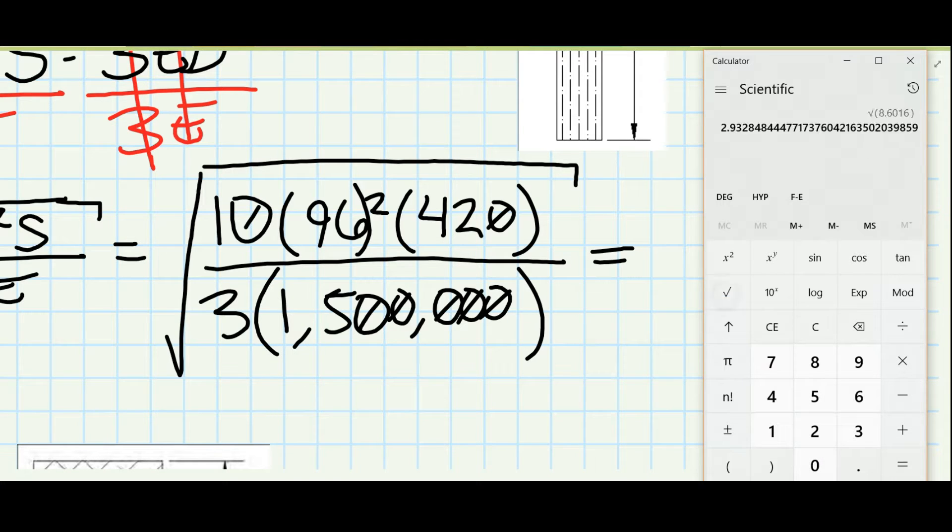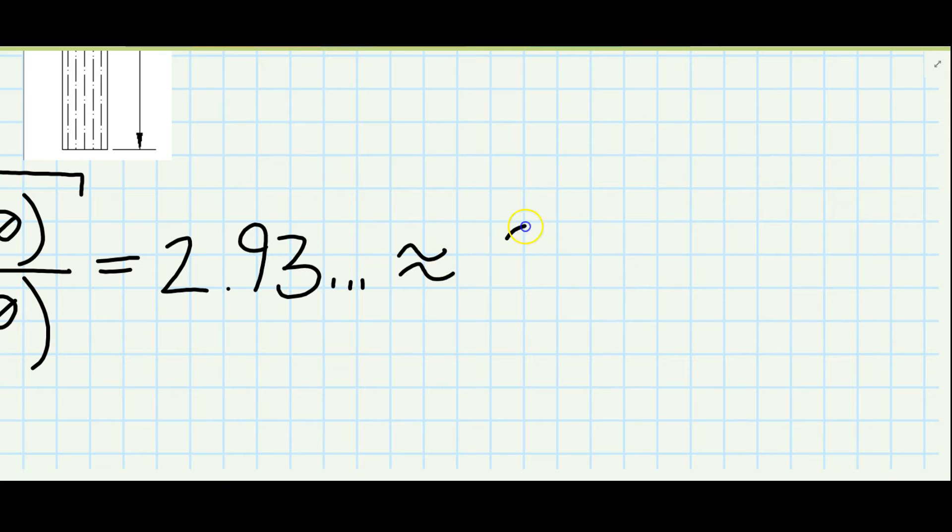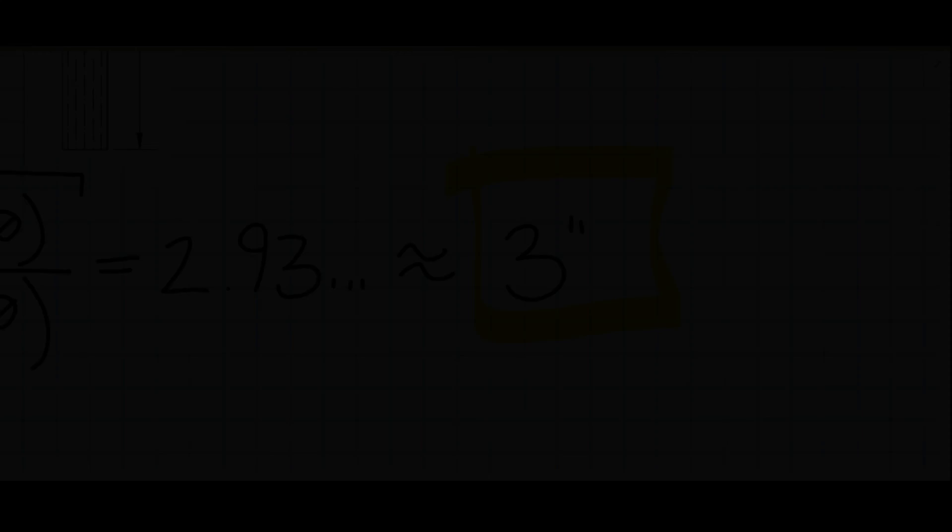Take the square root of that and we get 2.93 something, but we need to round up to the nearest whole number. So there we go, the answer is 3.